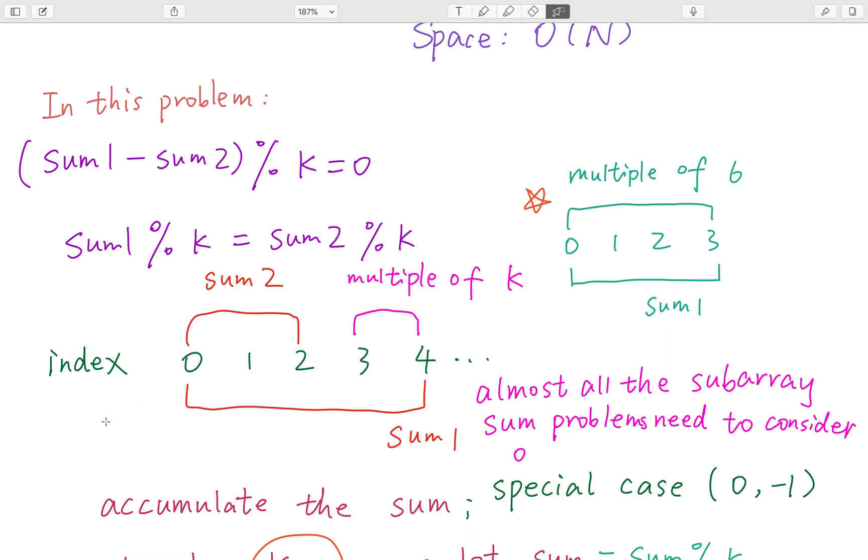We can do a normal iteration from left to right, accumulate the sum, and if k is not equal to zero, use sum modulo k. If we've already seen this value before, that means we've found a subarray whose sum equals a multiple of k.